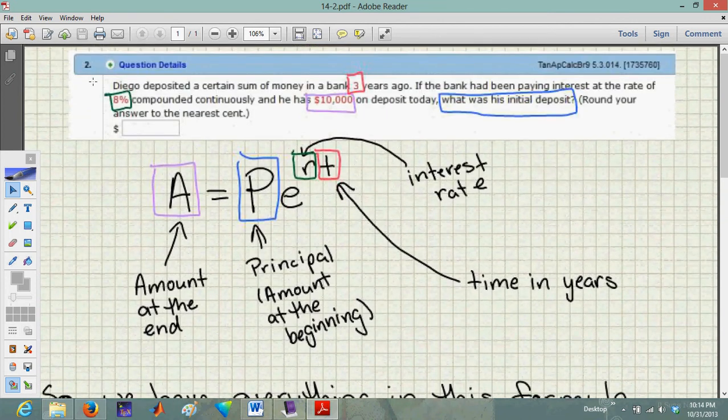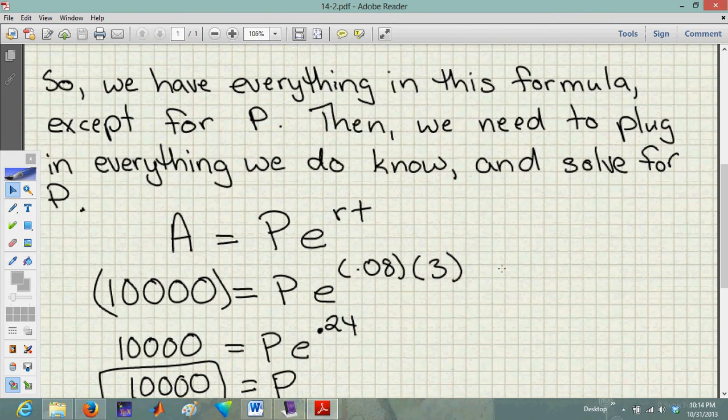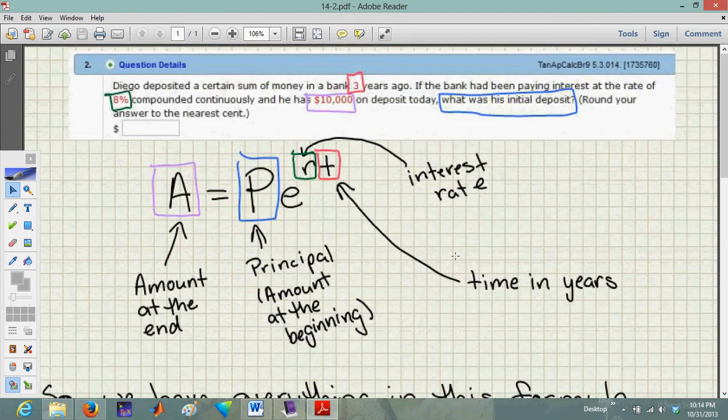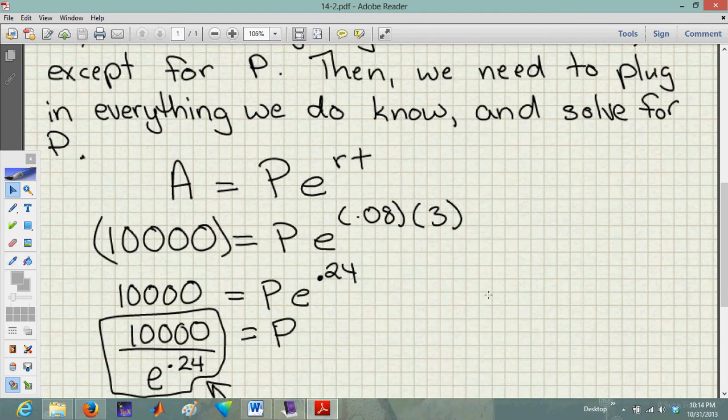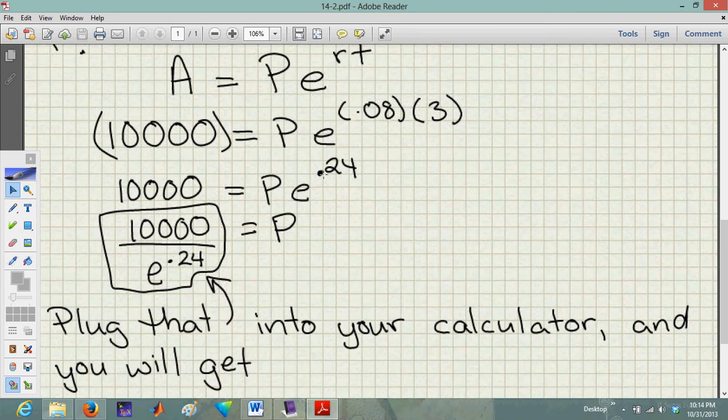That was the 0.08. Remember when I said it looks like eight - don't put in eight. That's eight over a hundred, which is 0.08. So I plugged in 0.08 for my rate. And T time, that was three years ago, so I plugged in a three. Now I just solve. I've got 10,000 equals P times E. I just multiplied those two things together to give me my new exponent - that's E to the 0.24.